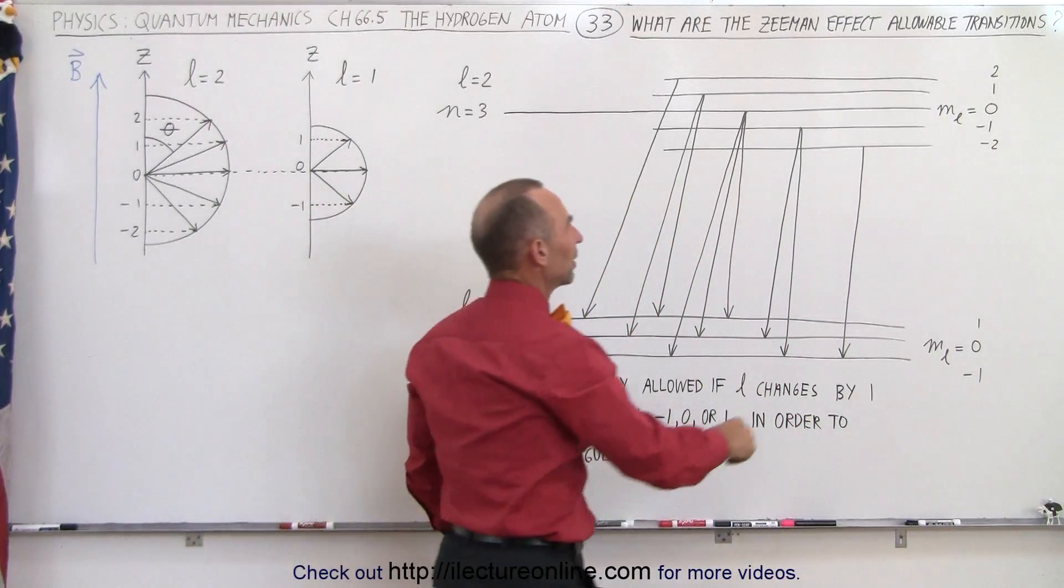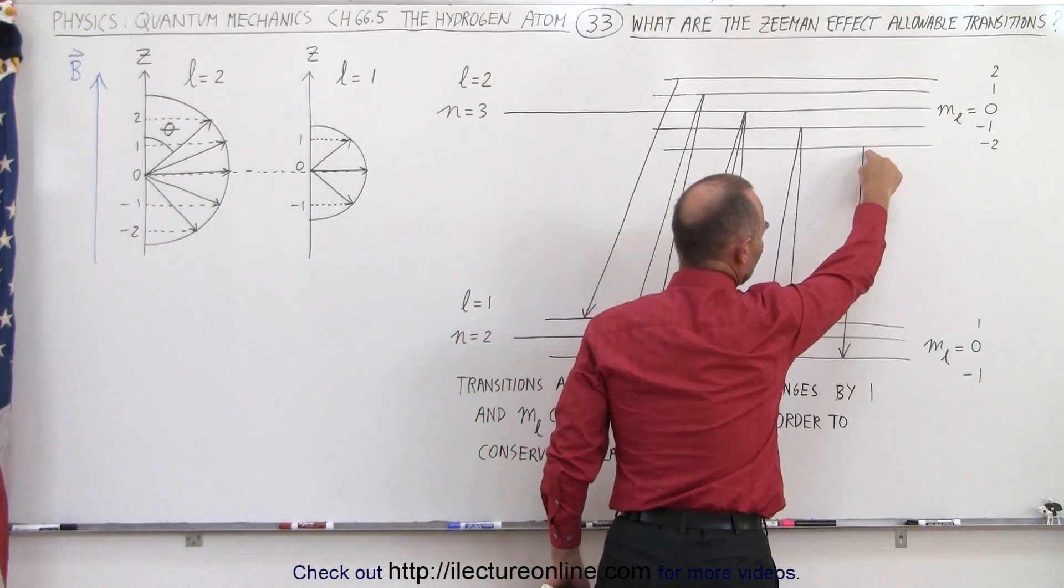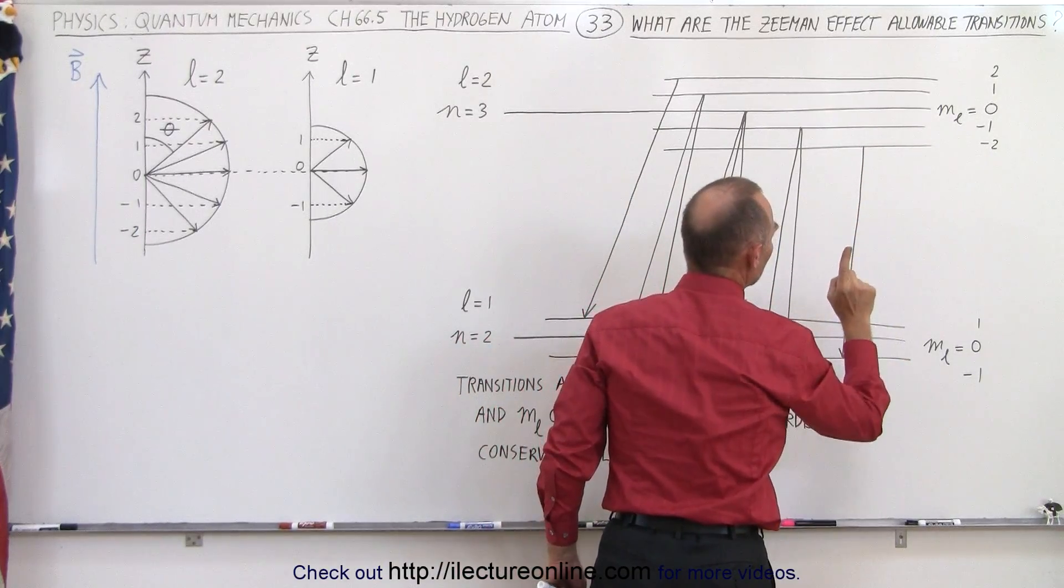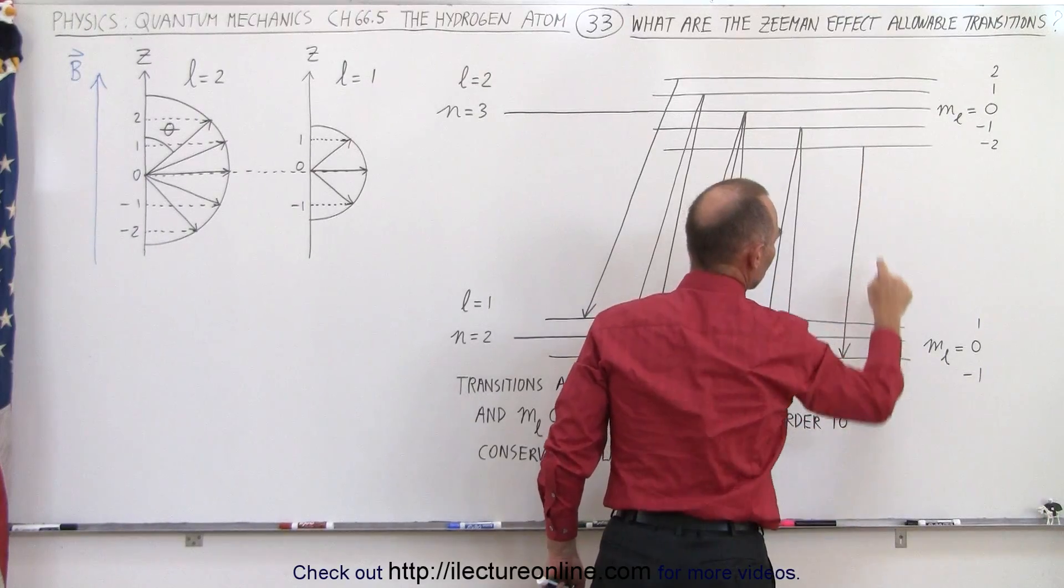And finally, when the electron starts from this energy level and goes down to here, notice there can only be one possible jump from minus 2 to minus 1.